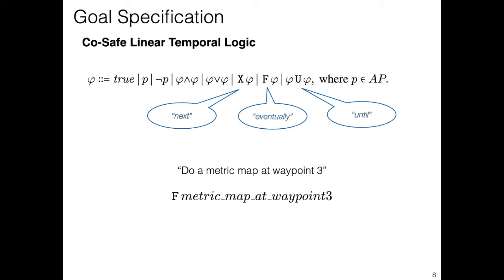These operators are the next operator, requiring a property to hold in the next state. The eventually operator, requiring a property to hold sometime in the future. And the until operator, requiring its first argument to hold in all states until its second argument becomes true.